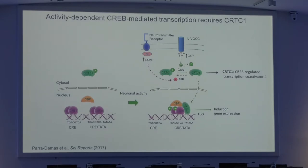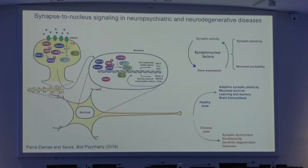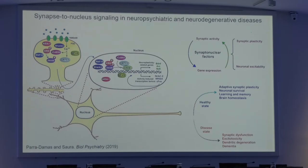CREB transcriptional regulation, in certain circumstances of neural or synaptic activity, requires CRTC1. An important concept is that this co-transcriptional co-activator, in contrast to CREB which is mainly nuclear, is present at synapses — together with other factors I call synapse-to-nuclear factors. After synaptic stimulation, some of these factors travel through dendrites to the nucleus, activating CREB-mediated transcription and regulating genes involved in neuroplasticity.